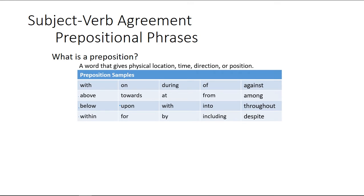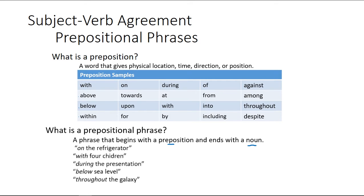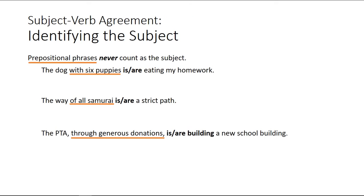What is a prepositional phrase? A prepositional phrase is a pair of preposition and a noun. So let's look at some of those. On the refrigerator, here's our preposition, and here's our noun, the refrigerator. With four children, below sea level, are prepositional phrases. Now why is this important? Because we're in subject verb agreement. Well the really cool thing about prepositional phrases is they never count as a subject.